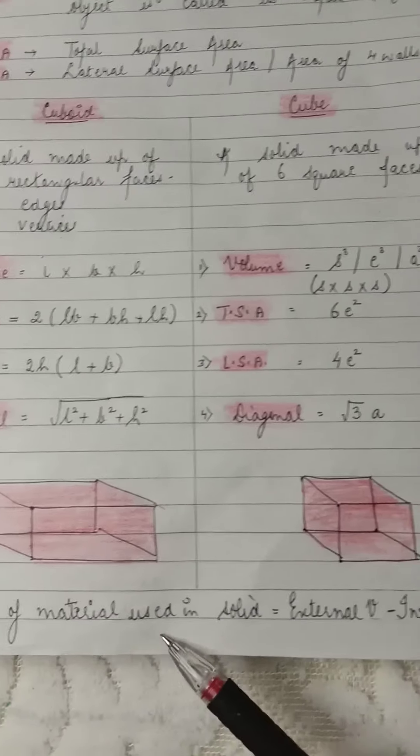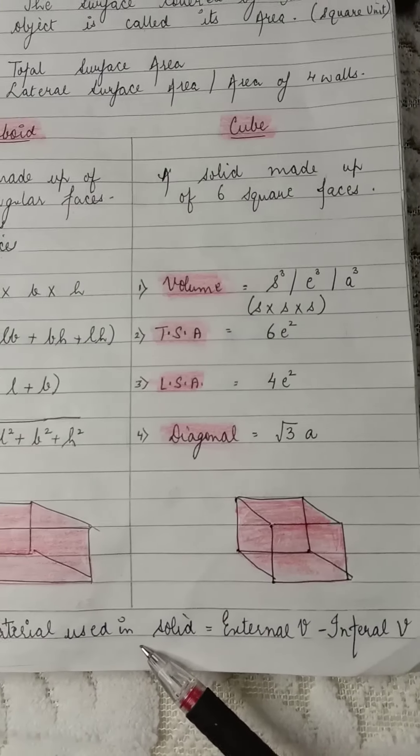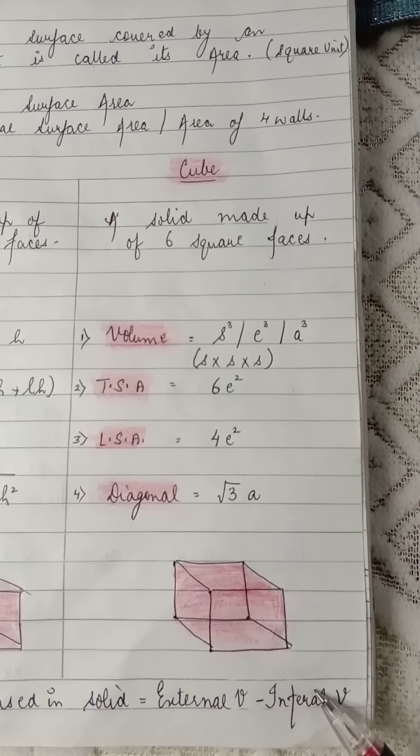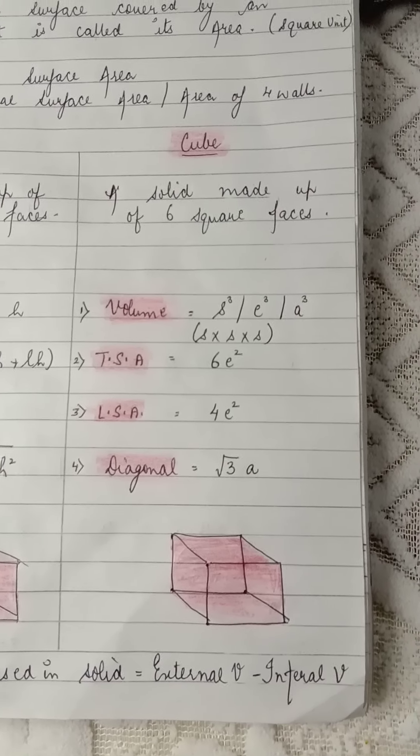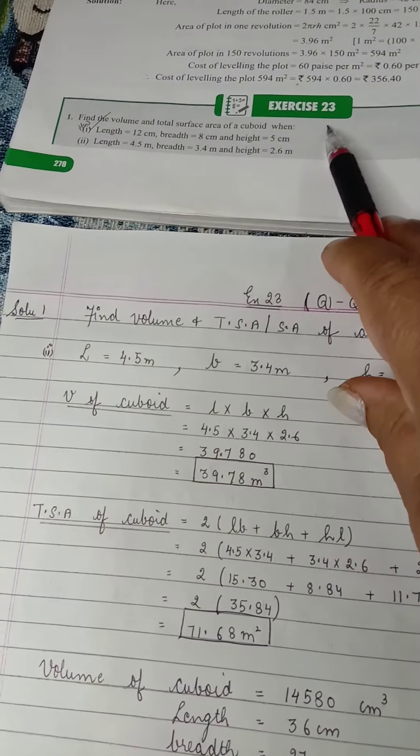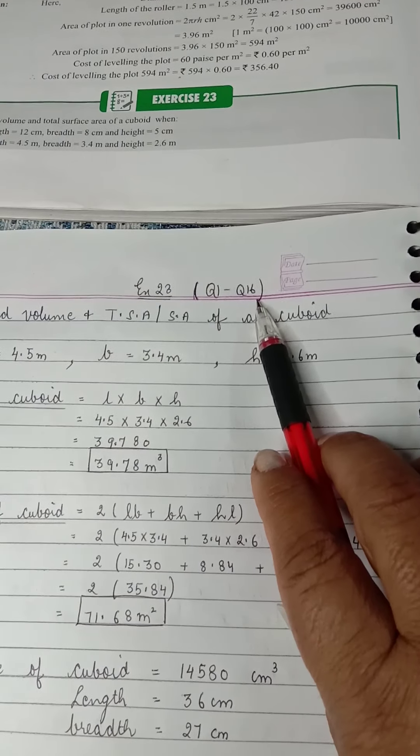Next, now there's one more formula: volume of material used in a solid. Suppose you want to find out how much material is used in a solid object. External volume minus internal volume of the object.